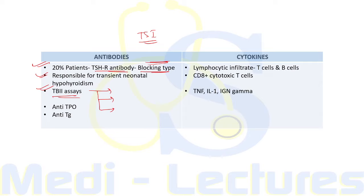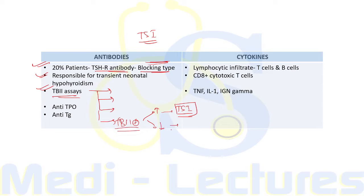Therefore, clinical correlation is needed alongside TBII assay results. If the TBII assay is positive and clinical features of hyperthyroidism are present, thyroid stimulating immunoglobulin is considered to be present. If the TBII assay is positive along with clinical features of hypothyroidism, then a TSH receptor blocking antibody is considered present.